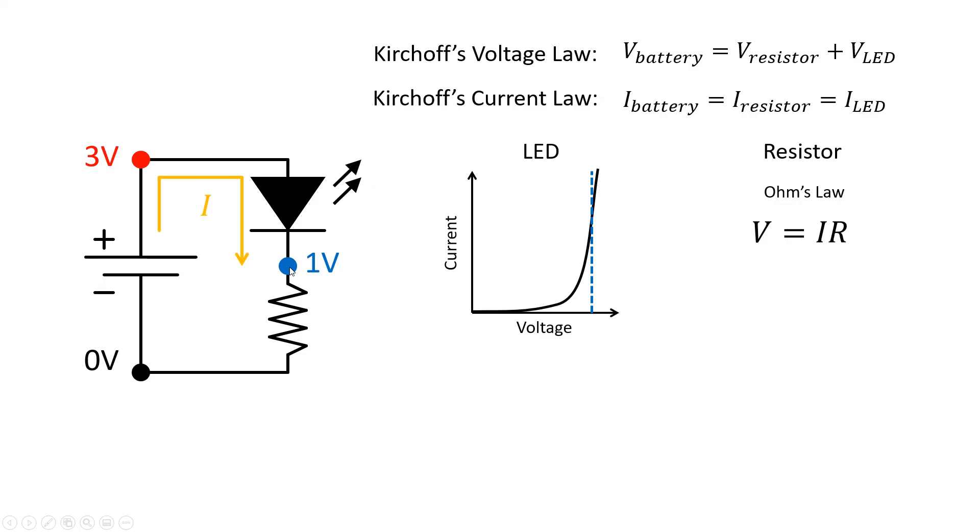Now we can do the same thing we did last time and calculate the current through the resistor after calculating the voltage drop across the resistor. In this case, the voltage drop across the resistor is one volt minus zero volts, which again is one volt. So now when we use Ohm's law to calculate the current, we get the same answer. One volt divided by 47 ohms is equal to 21 milliamps, and since the resistor and the LED are still in series, that is still equal to the current through the LED.